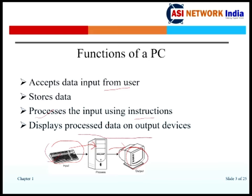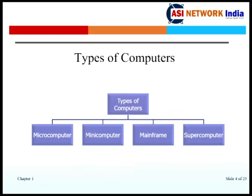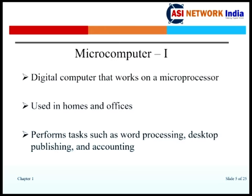There are several types of computers: microcomputers, mini computers, mainframe, and supercomputers, which we will discuss in upcoming slides — each one is slightly different from the others. Microcomputers are digital computers that work on a microprocessor, generally used at home and offices for small purposes, performing tasks such as word processing, desktop publishing, and accounting.